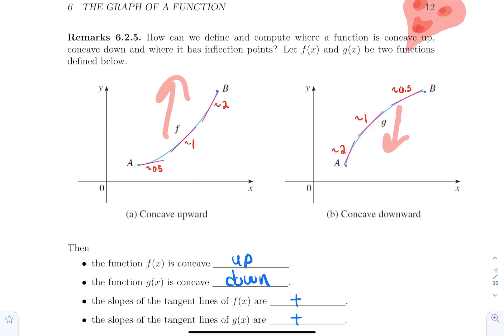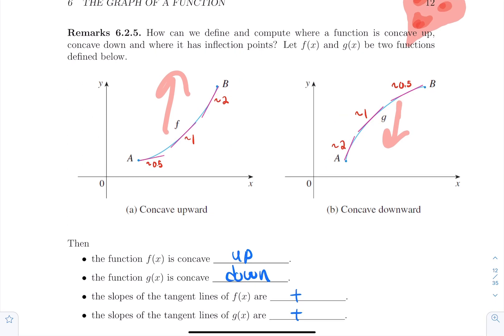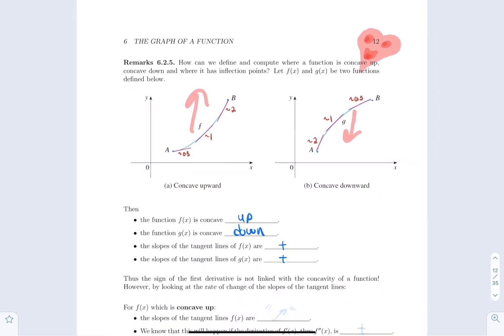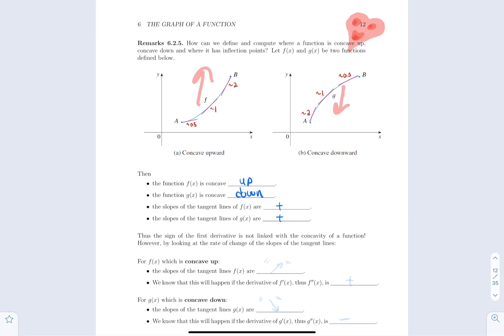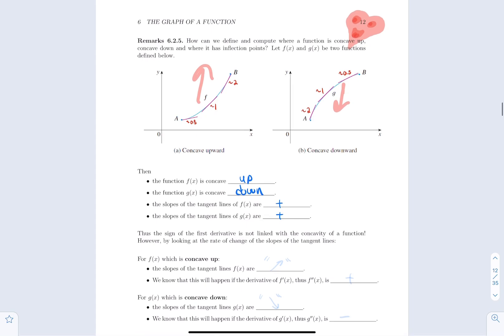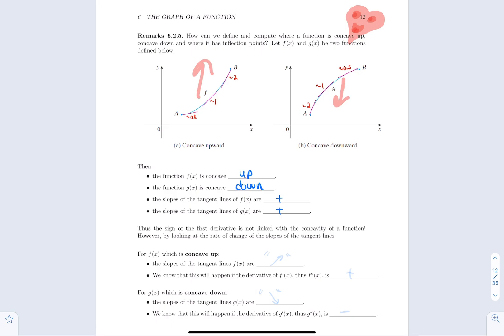The slopes of the tangent lines are positive for f and also positive for g. So the sign of the first derivative — both functions are increasing — doesn't give you any information about concavity. But when you look at how the slopes themselves are changing: for f they go from 0.5 to 1 to 2, increasing; for g they go from 2 to 1 to 0.5, decreasing.